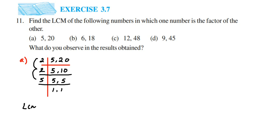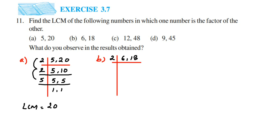The second question: we have 6 and 18. We're going to divide 6 and 18 in the same method as the first question. So for 6 and 18 we start with 2 — both 6 and 18 go in the 2 times table. 2 threes are 6 and 2 nines are 18.